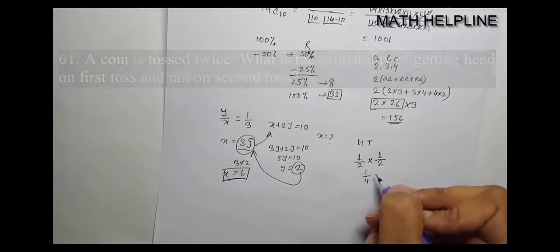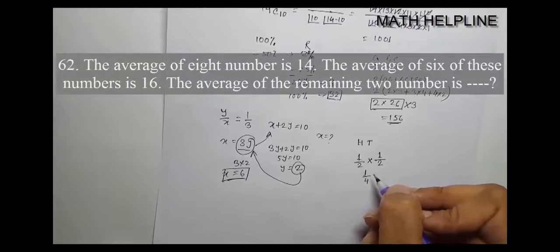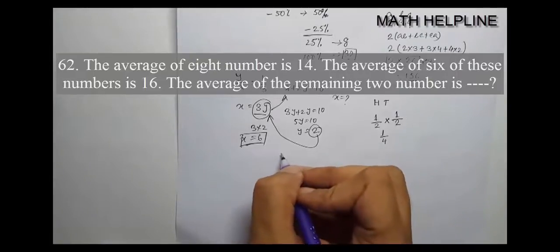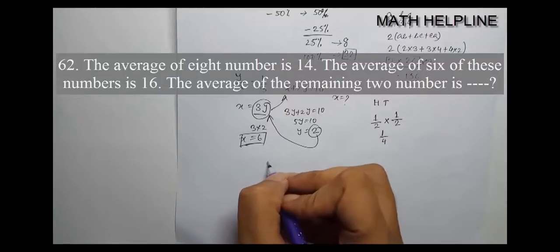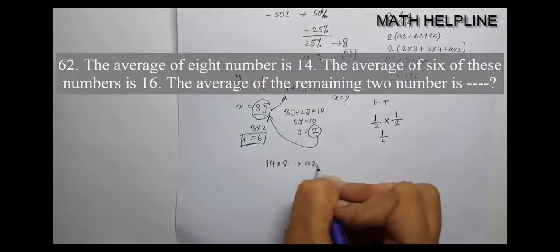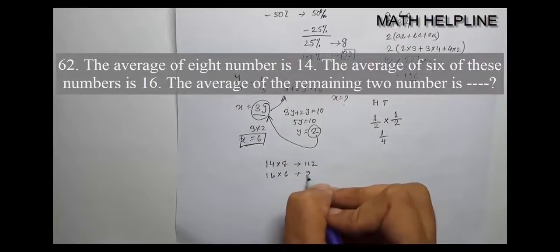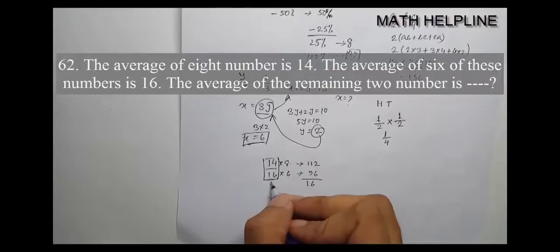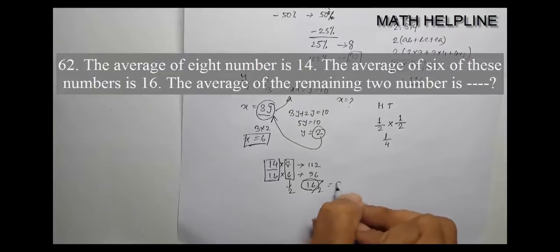The average of 8 numbers is 14. The average of 6 of these numbers is 16. The average of the remaining 2 numbers is? Total of 8 numbers is 8 times 14 equals 112. Total of 6 numbers is 6 times 16 equals 96. The difference is 112 minus 96 equals 16. So the 2 remaining numbers total 16, and their average is 16 divided by 2 equals 8. The answer is 8.